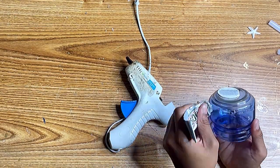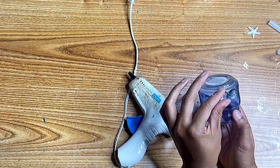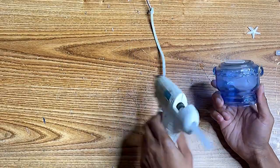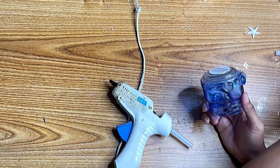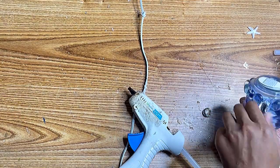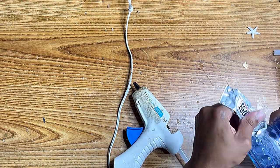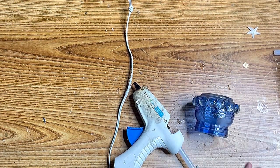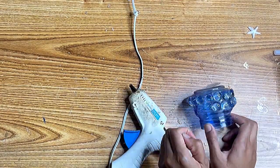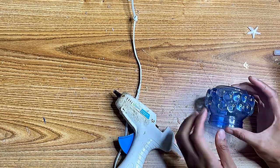I removed the string from around it and I'm going to be doing the same technique, putting the E6000 around the jar and then putting the hot glue and then putting the marbles around.